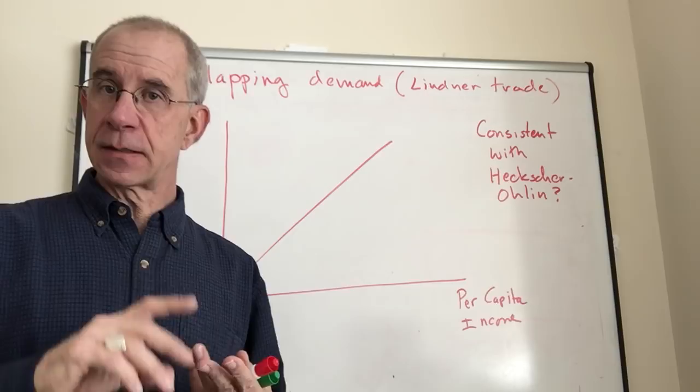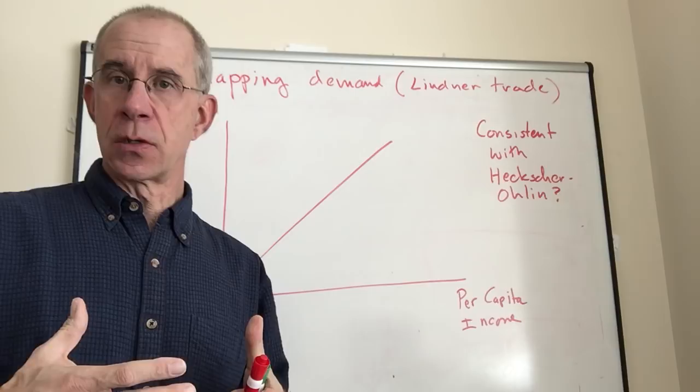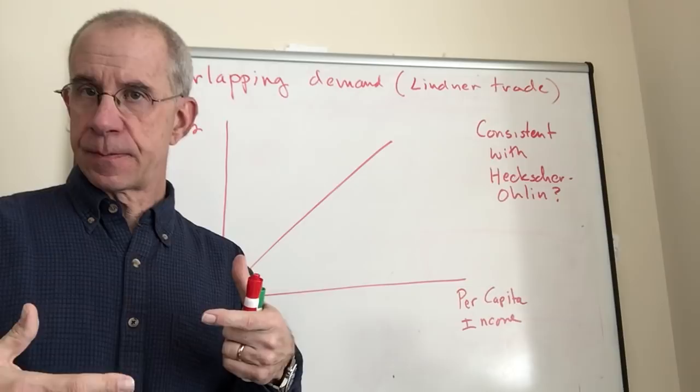One of the things that they don't explain is the vast amount of trade that occurs among developed countries, high-income countries.